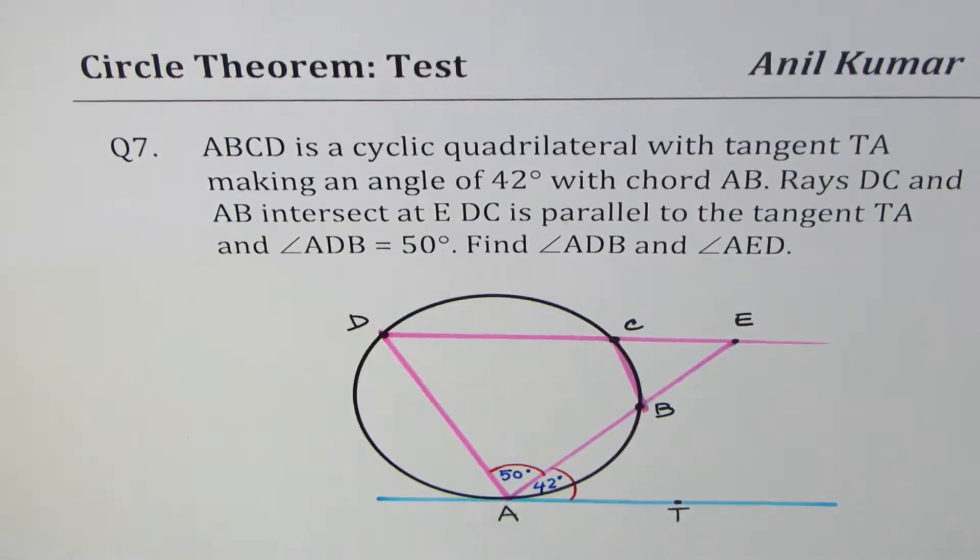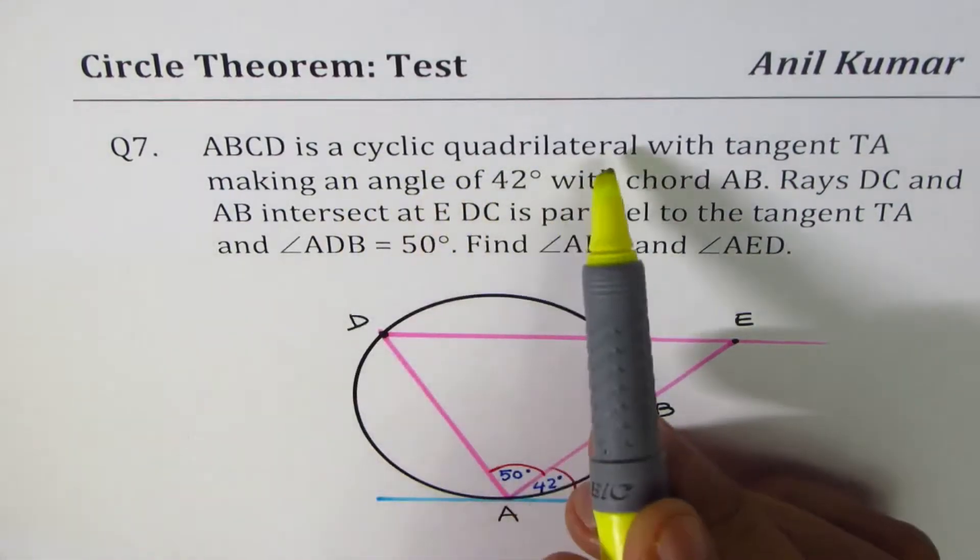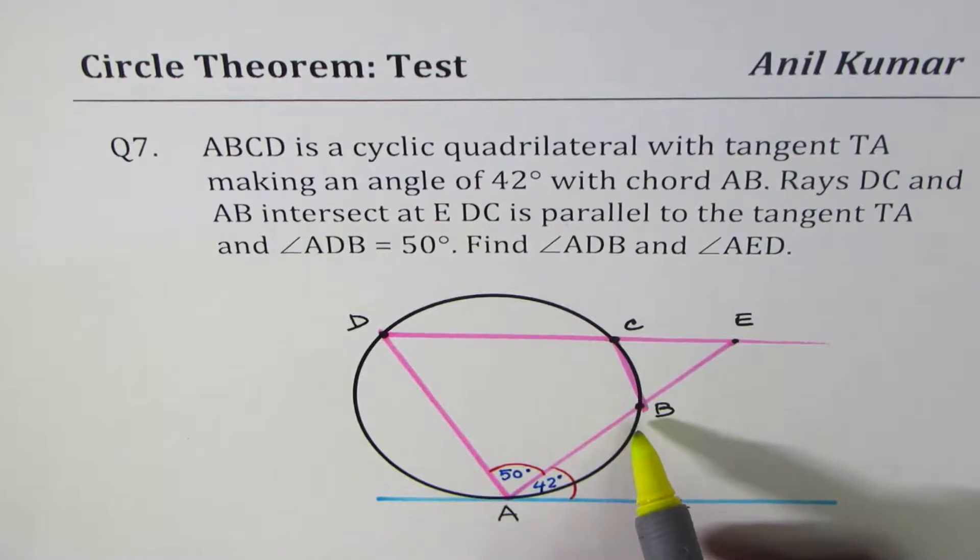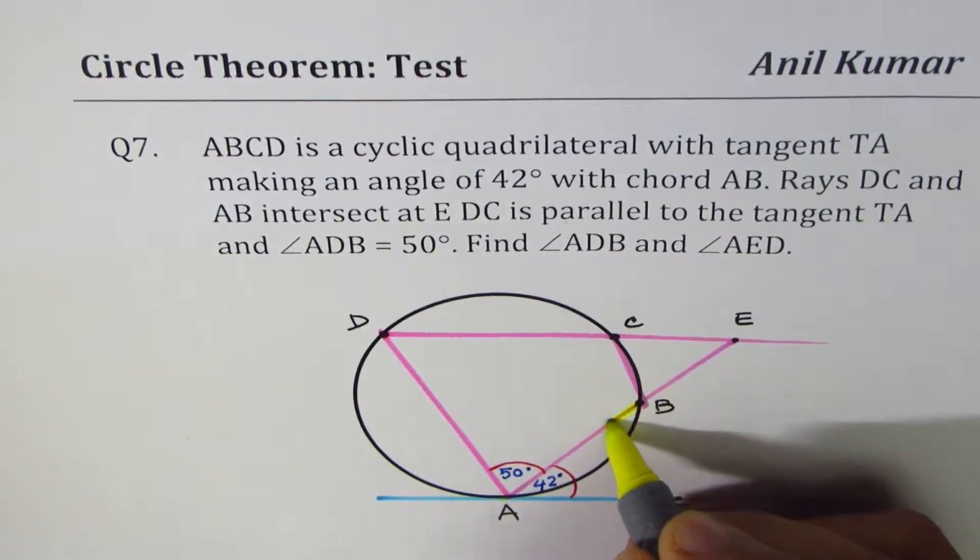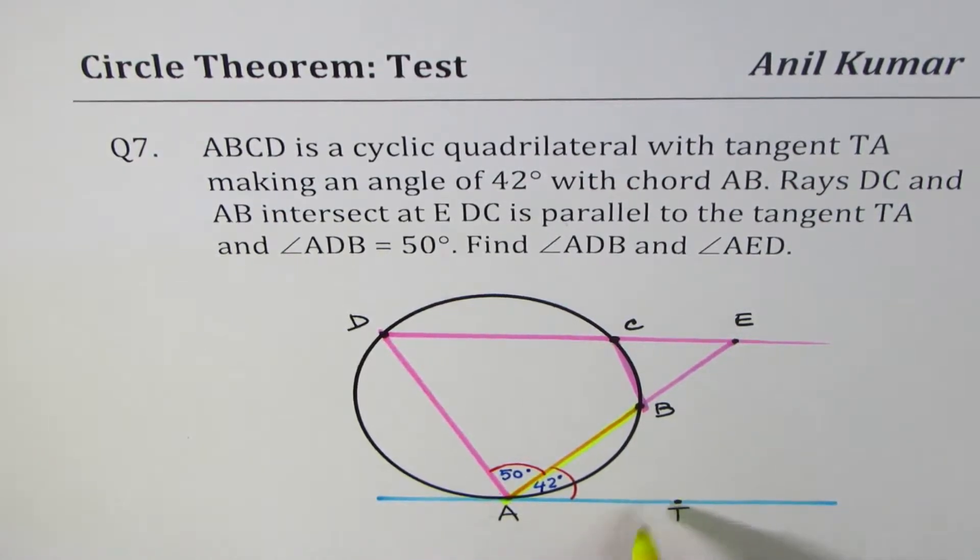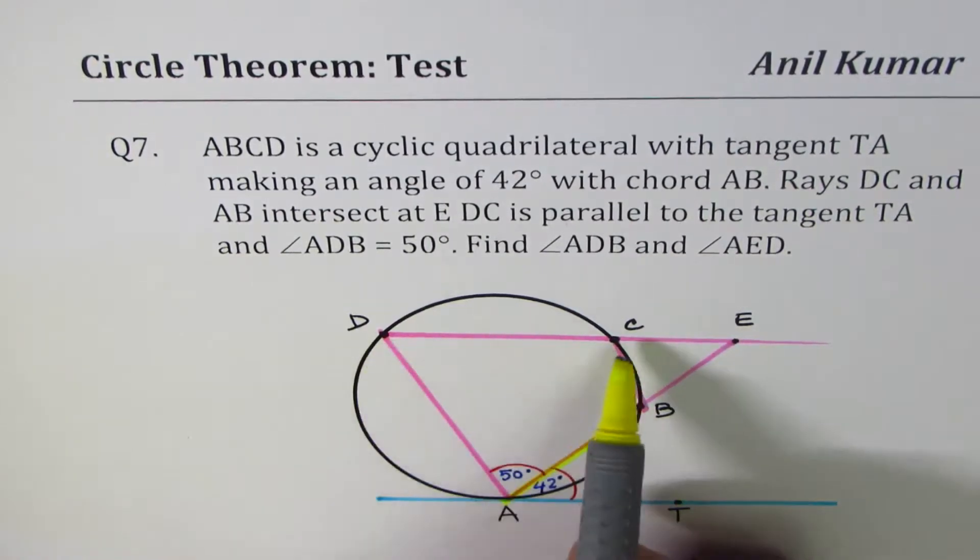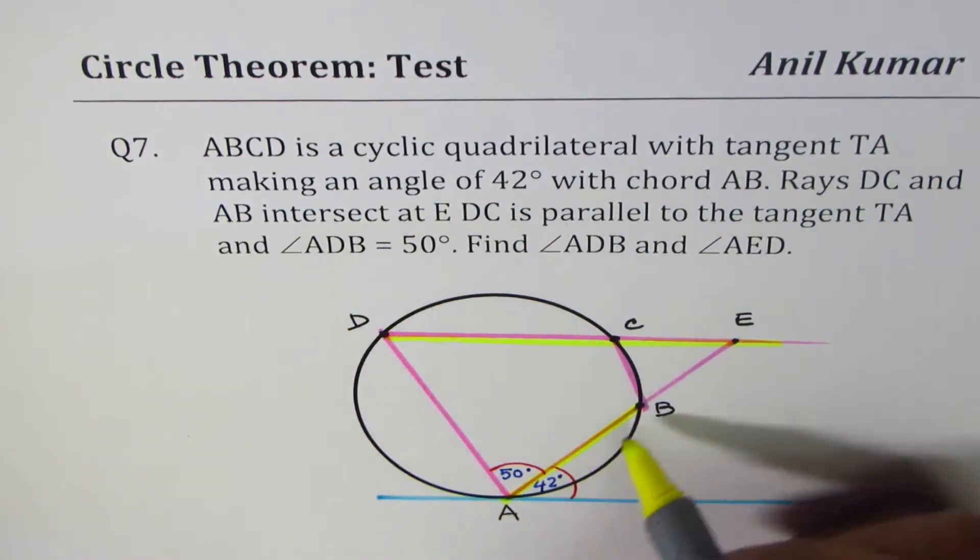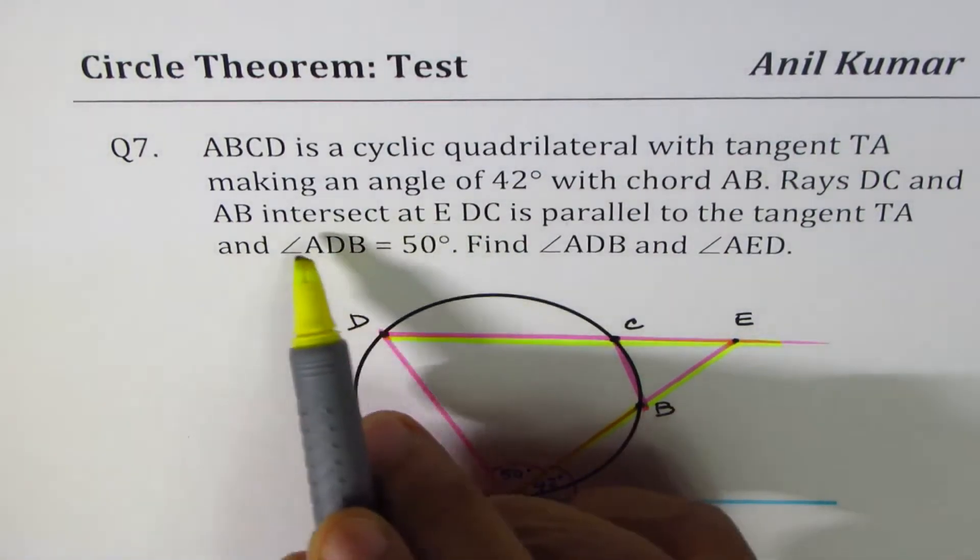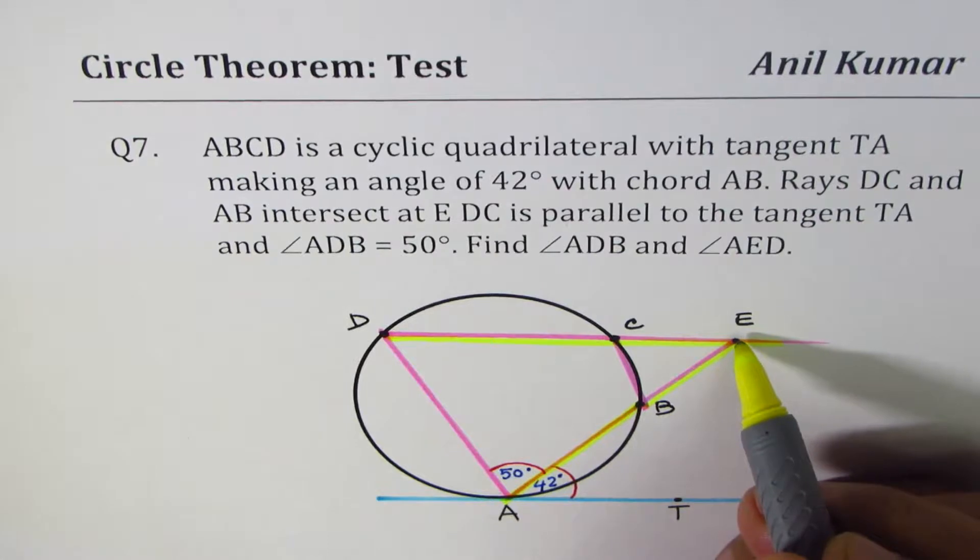ABCD is a cyclic quadrilateral with tangent TA making an angle of 42 degrees with the chord AB. So ABCD is a cyclic quadrilateral means all these vertices are on the circumference of the circle with the tangent TA making an angle of 42 degrees with the chord AB. So that's the chord AB making an angle 42 degrees with the tangent. Rays DC and AB are straight lines which intersect at E.